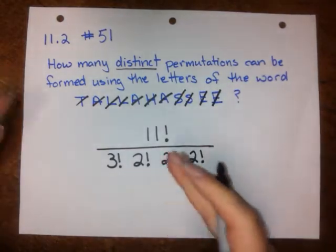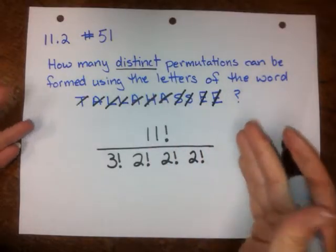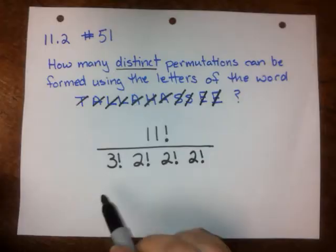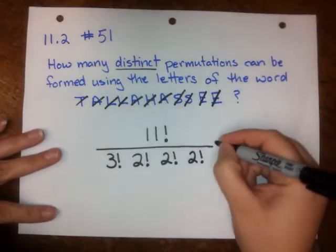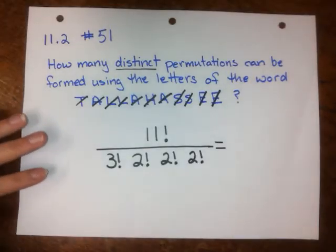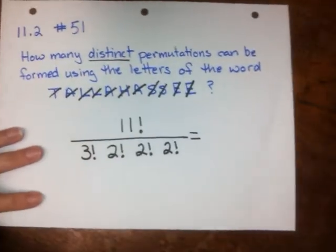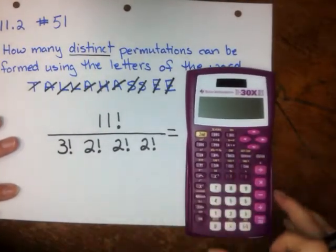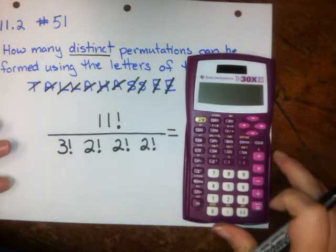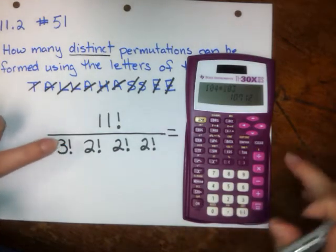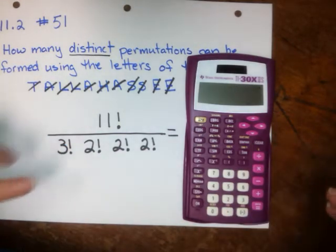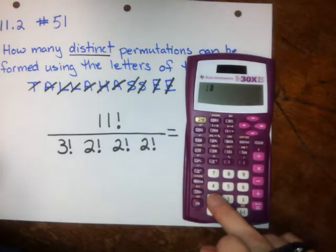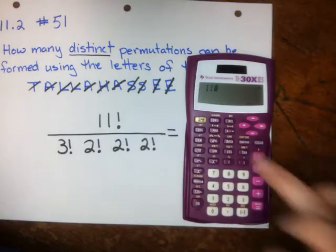Any time you have a letter that shows up more than once, however many times it shows up, put that factorial in the denominator. And now we can figure this out. We're going to plug this into our calculator. Since we've got so much going on downstairs, let's plug in what's in the denominator separately. The first thing I'm going to do is 11 factorial. Remember, factorial is under the probability button — arrow over to the exclamation point and you get factorial.